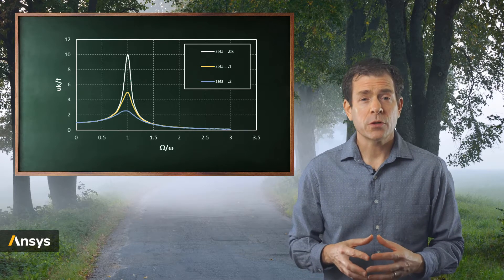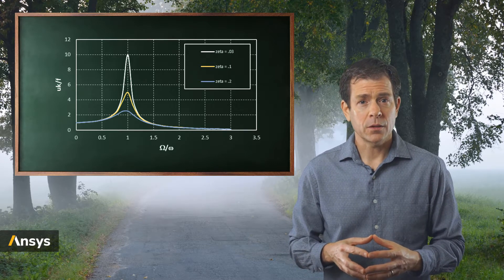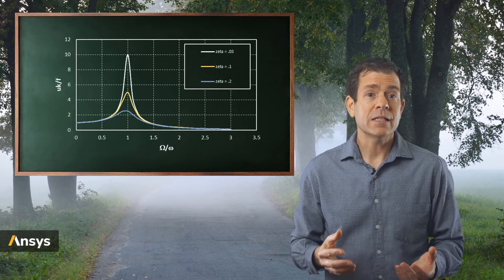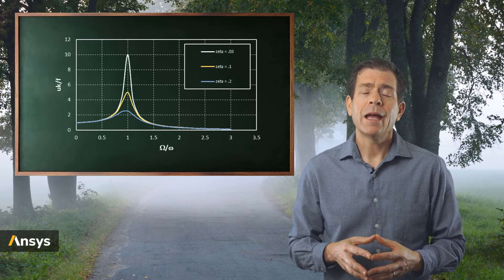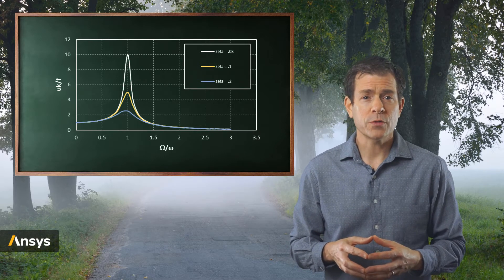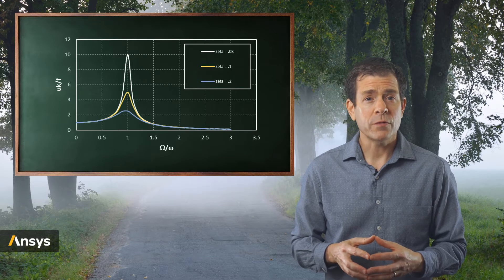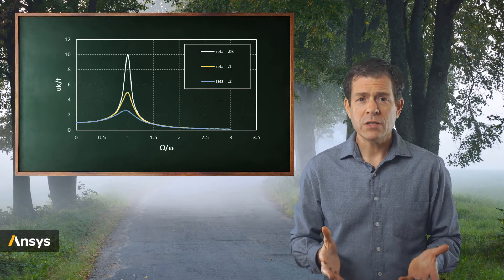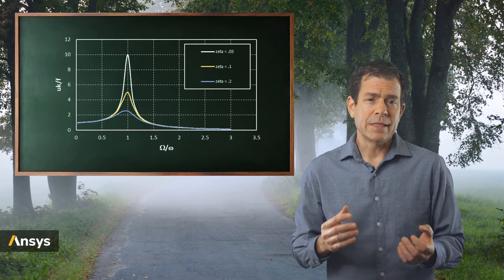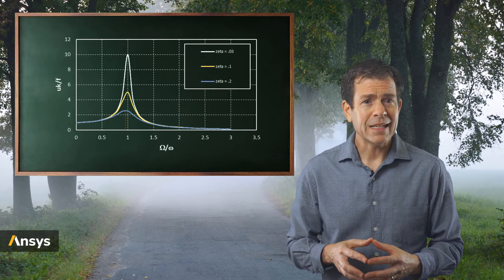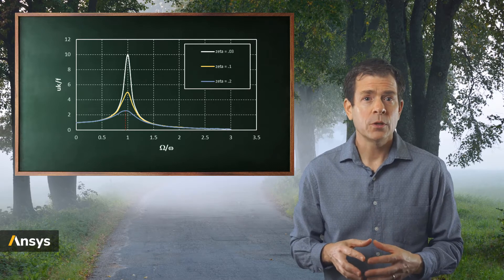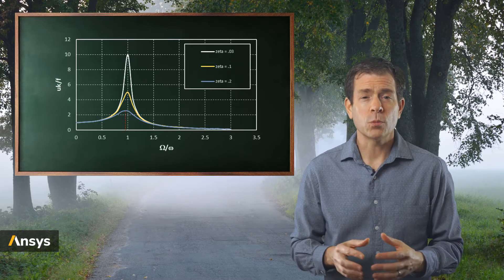When the imposed loading circular frequency approaches the natural frequency, which is lowercase omega, resonance occurs as indicated by the spikes in the graph. An increase in damping decreases the amplitude of the response for all imposed frequencies, but has the most noticeable effect at resonance. A small change in damping has a very large effect on the response near resonance. The damped natural frequency omega D is less than the natural frequency omega, as we can see when zeta is 0.2 with a slight shift to the resonance peak less than 1.0.